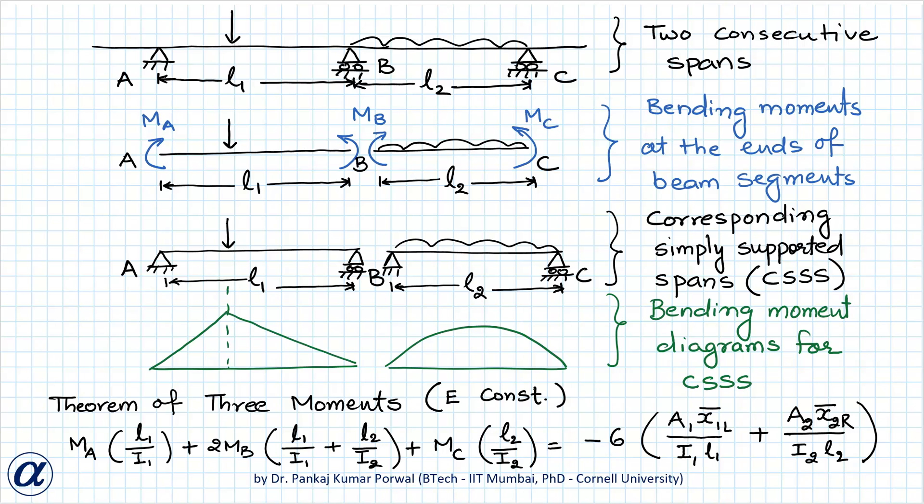Conceptually, this theorem is applicable for continuous beams and for any given continuous beam, we select two consecutive spans say A, B, C in this case, then at the ends of beam segments of these two spans, there will be bending moments MA, MB, and MC in this case.